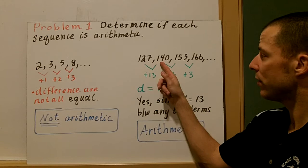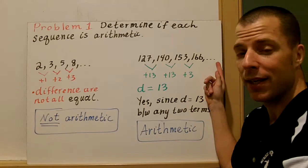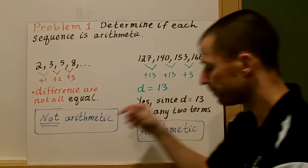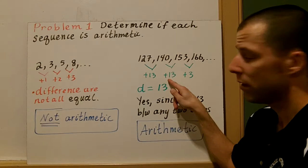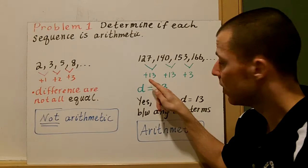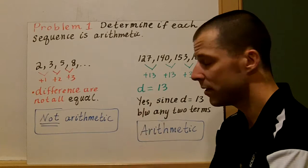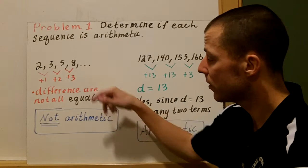The second example: 127, 140, 153, 166, and so on — an infinite sequence. Starting from the end: 166 minus 153 is 13, 153 minus 140 is 13, and 140 minus 127 is 13. Each of these common differences is the same number — 13. That is an arithmetic sequence since the common difference is constant. The first sequence is not arithmetic; this second one is.